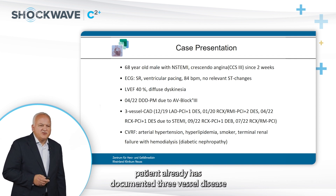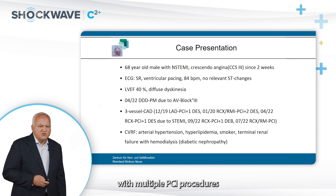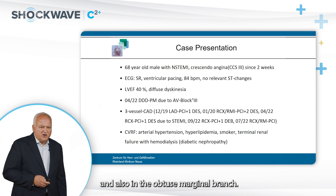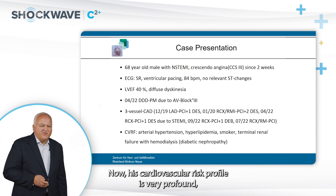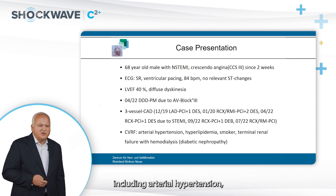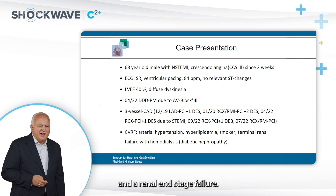In his history, the patient already has documented three-vessel disease with multiple PCI procedures in the LAD, circumflex artery, and also in the obtuse marginal branch. His cardiovascular risk profile is very profound, including arterial hypertension, hyperlipidemia, smoking, and renal failure.